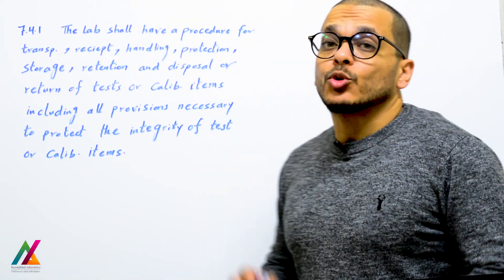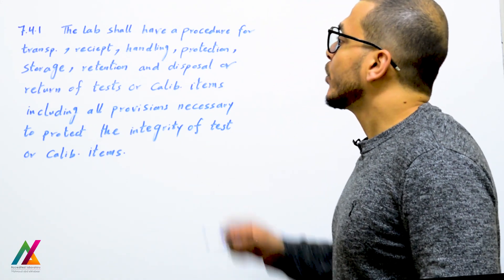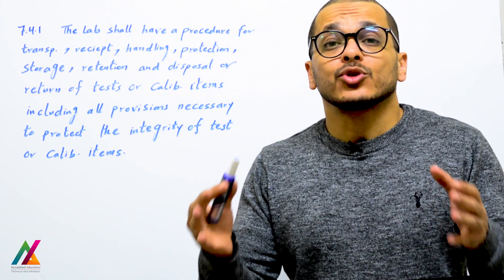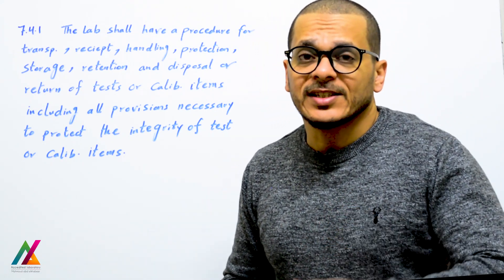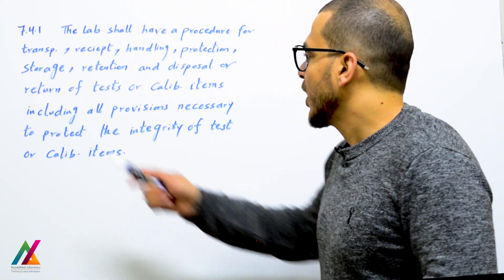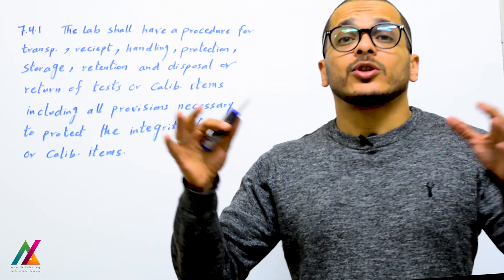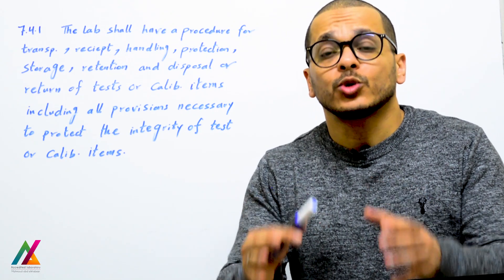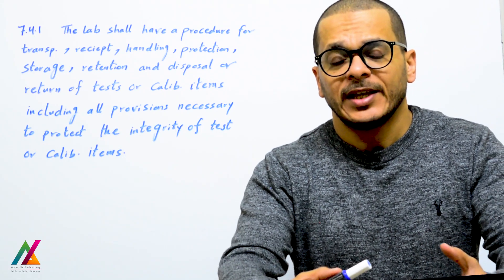For calibration laboratories, the lab shall have a procedure — it is mandatory — for transportation, receipt, handling, protection, storage, retention, and disposal or return of test or calibration items. You will prepare a procedure including all of these points to protect the integrity of the sample up to receipt in the lab and subsequent handling to ensure the integrity of the results.